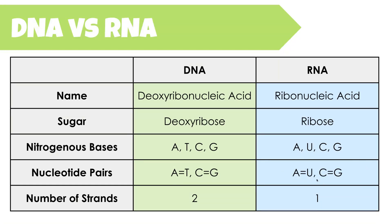DNA's structure is made up of two strands — it is double-stranded — whereas RNA is typically single-stranded. RNA might fold on itself and look double-stranded, but in essence it is really just one strand of repeating nucleotides.